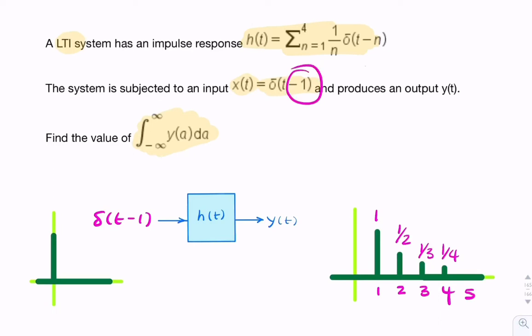Because this is a time invariant system, the output y(t) would equal the impulse response delayed by one second.